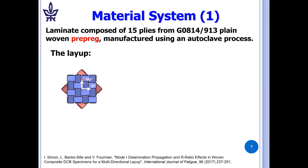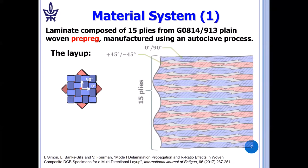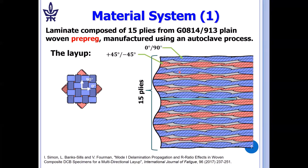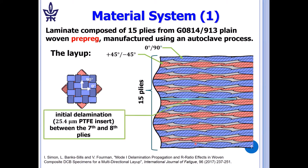For this material system, the carbon fiber is G0814, the epoxy is 913. It's composed of 15 plies from this prepreg and it's manufactured in an autoclave where the temperature rises to melt the epoxy and it's in a vacuum. Our layup is alternating layers of the weave where the yarn is in the 0/90 degree direction and then for the ply below it, it's in the plus 45 minus 45 degree directions rotated around the axis that's coming out of the slide. We have 15 plies, 7 plies above. This represents the delamination and 8 plies below, alternating between 0/90 and plus 45 minus 45 degrees. The initial delamination is made by a PTFE film of a thickness of 25.4 microns.